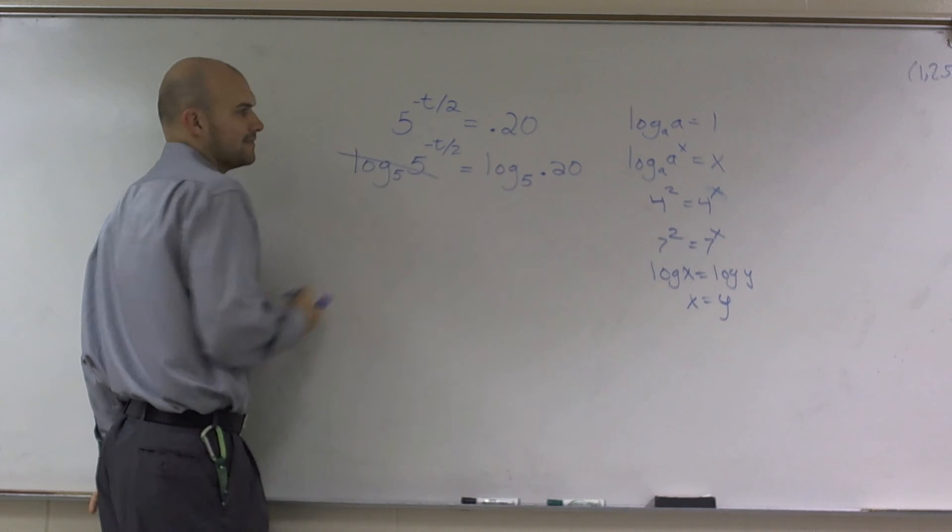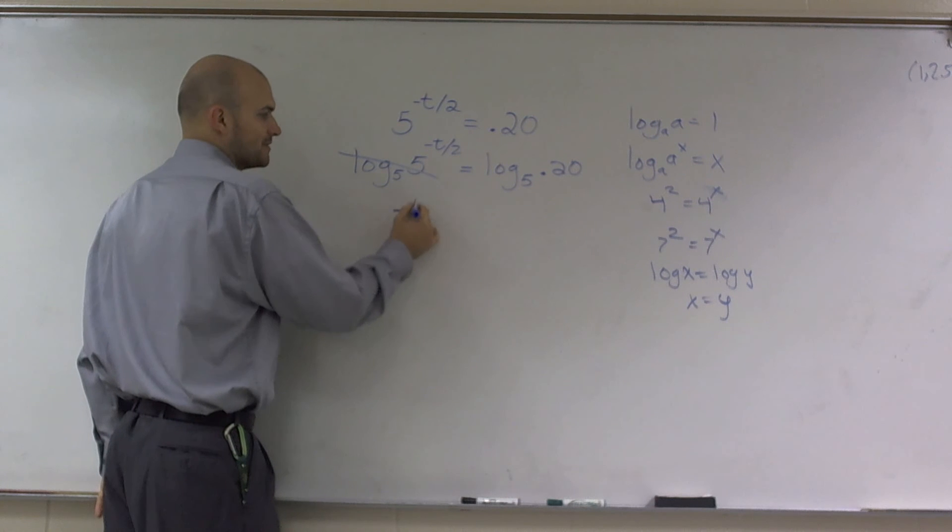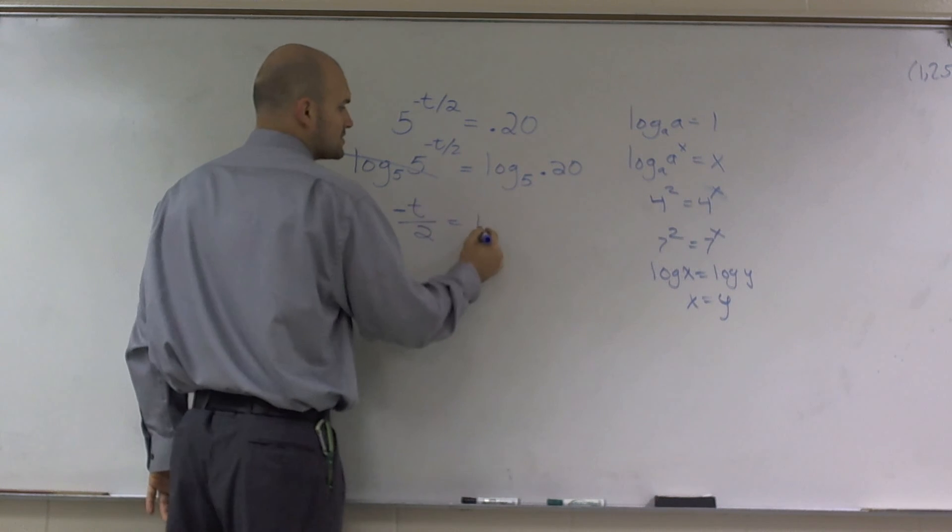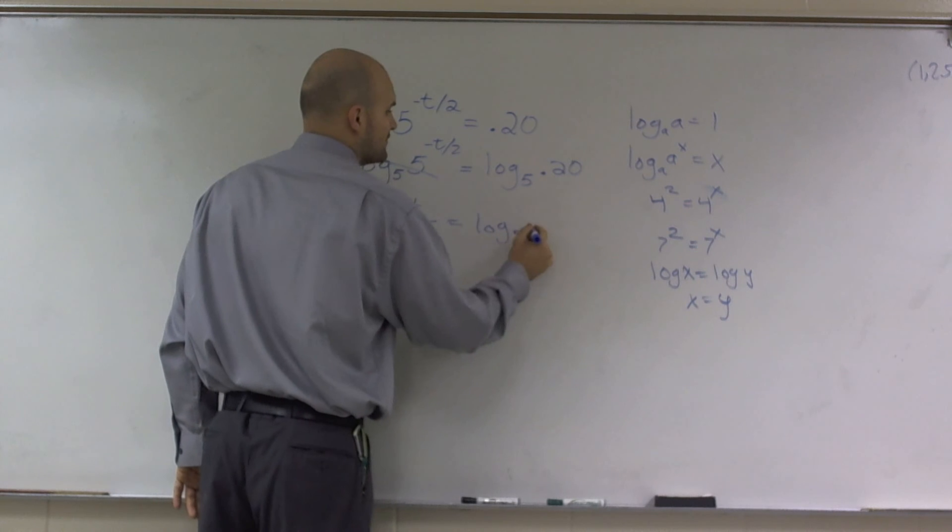So they're both to log 5. So now, that's going to essentially say cancel out. So I'm left with negative t over 2 equals log base 5 of 0.20.